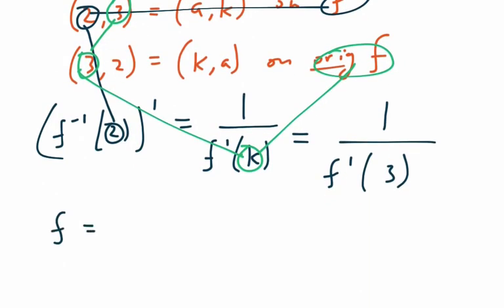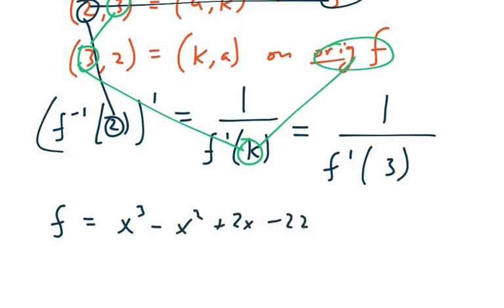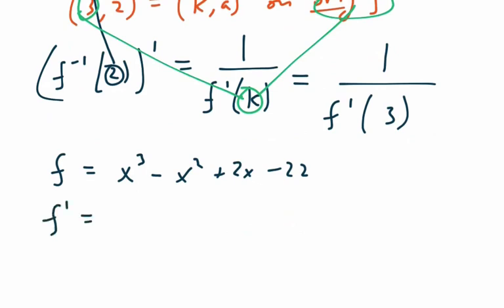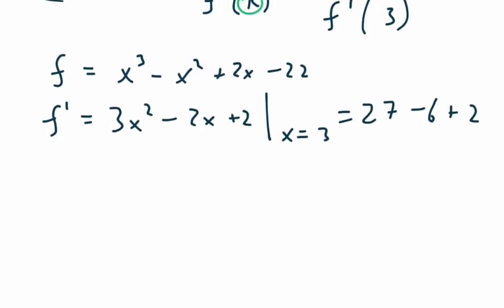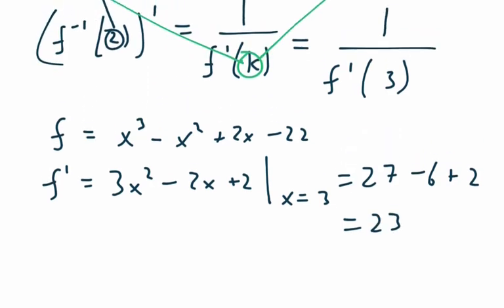So this pretty much just boils down to 1 over f prime of 3, which means what we're going to do is find f prime, plug in 3, and take the reciprocal. So, if f of x is x cubed minus x squared plus 2x minus 22, then f prime is the power rule, 3x squared minus 2x plus 2. We're going to evaluate this at x equals 3 to get 3 times 3 squared, which is 27, minus 2 times 3 is 6, plus 2, and that's going to give us a total of 23. And then when we plug this into the answer, we will have 1 over 23, the reciprocal.